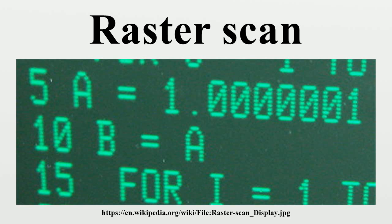In raster scanning, the beam sweeps horizontally left to right at a steady rate, then blanks and rapidly moves back to the left, where it turns back on and sweeps out the next line. During this time, the vertical position is also steadily increasing, but much more slowly. There is one vertical sweeper image frame, but one horizontal sweeper line of resolution.